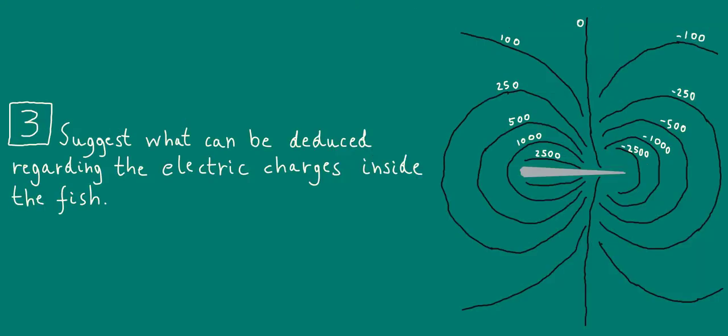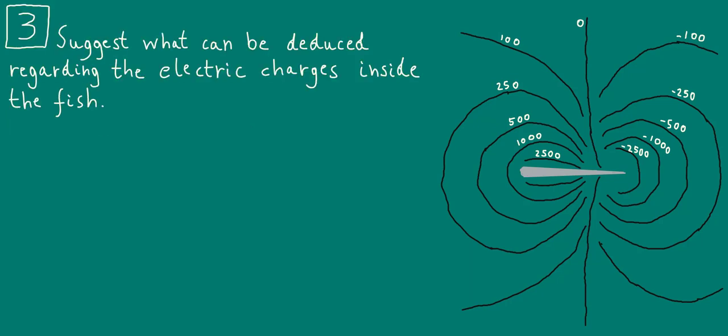Now let's move on to the next question. Suggest what can be deduced regarding the electric charges inside the fish. Please pause the video and have a think about this by yourself. Okay, welcome back. The key to answering this question is to realize that the equipotentials and field lines give us information about the electric charges present inside the fish. We already have the equipotentials, so let's try and figure out the field lines. If we draw in a few field lines, they'll look something like this. Notice that they intersect equipotentials at 90 degrees and point in the direction of decreasing electric potential, as required by the two important concepts we met earlier.